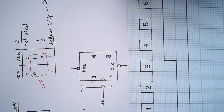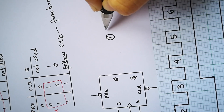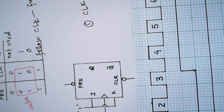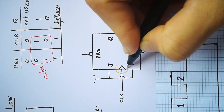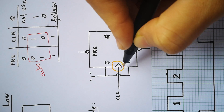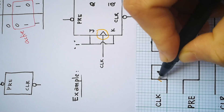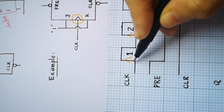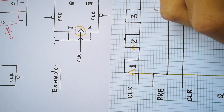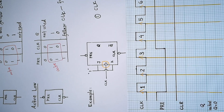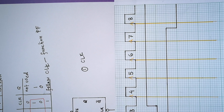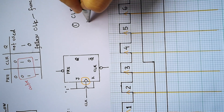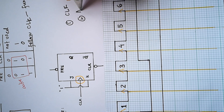We have the timing diagram here. The first step is you must draw the clock line. The clock is PGT because there is no bubble. So at each positive going transition, you draw the line. Draw all clock lines — here shown by the yellow lines.